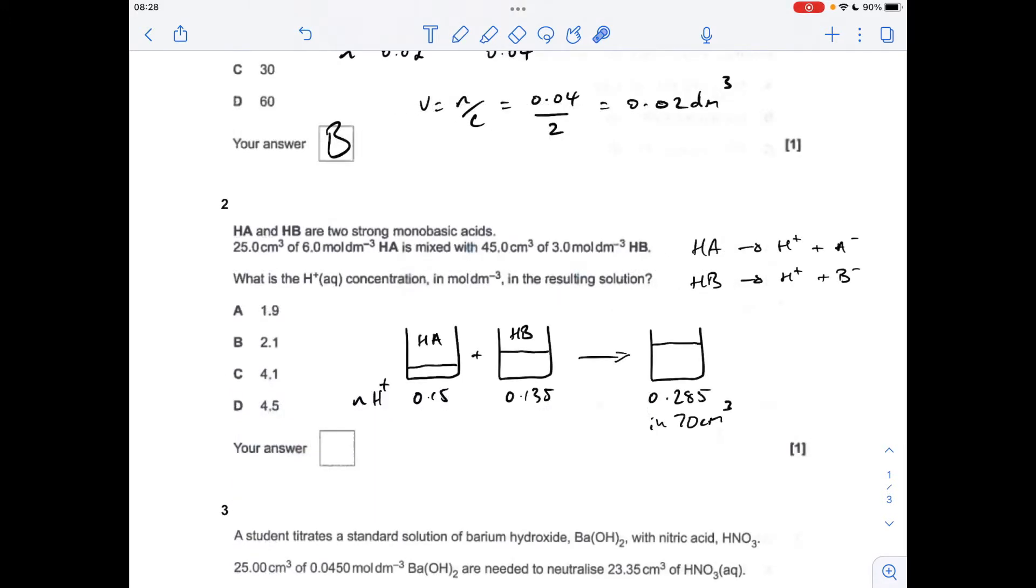Number two: HA and HB are two strong monobasic acids. The fact that they're monobasic means for every mole of that, you get a mole of H+ ions. From the concentration and volume of each acid, I've worked out the moles of H+ ions that would be in there. These are added together to form this mixture, so there'd be a total of 0.285 moles of H+ in that 70 cm³. All we've got to do is work out the concentration of H+, just moles over volume. So the answer was C.